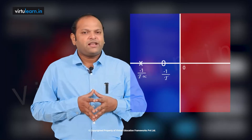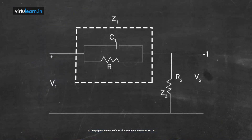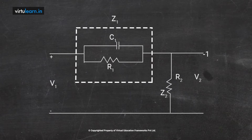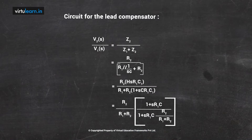The lead compensator can be realized using an electrical network. The circuit has two resistors R1 and R2, with a capacitor connected in parallel to R1. This is the input voltage, and the output is taken across R2. Taking Z2 = R2 and Z1 as the parallel combination of R1 and C, the transfer function V2(S)/VIN(S) equals Z2 / (Z1 + Z2).